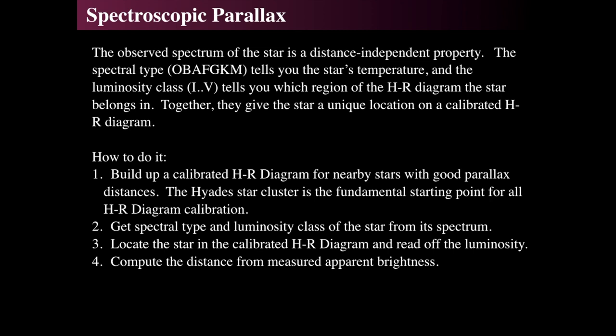You get the spectral type and luminosity class of some star from its spectrum. Remember that the widths of the lines depend on the luminosity class. Then you locate the star in the calibrated HR diagram and simply read off the luminosity, and you compute the distance from the measured brightness of the star. You know what the luminosity is because of the calibrated HR diagram, and from that you can get the distance, given that you can measure its apparent brightness.